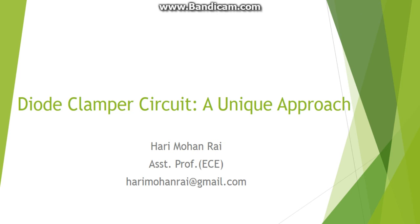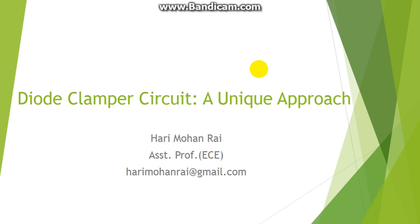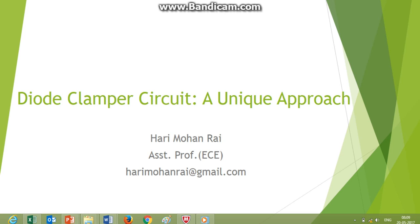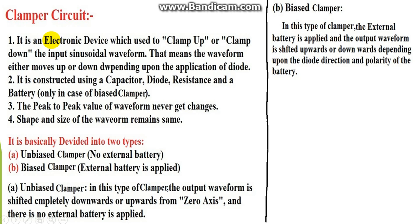Before explaining the diode clamper circuit, let us define what a diode is and how it works. The clamper circuit is basically an electronic device which clamps up or clamps down the input sinusoidal waveforms at the output. Whatever input we are giving — whether sinusoidal, square wave, lambda wave, or any wave — it only shifts upwards or downwards depending upon the diode application.